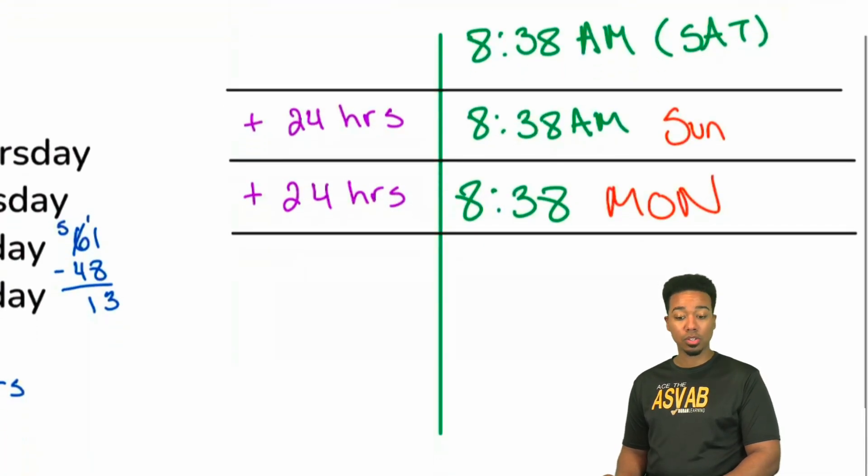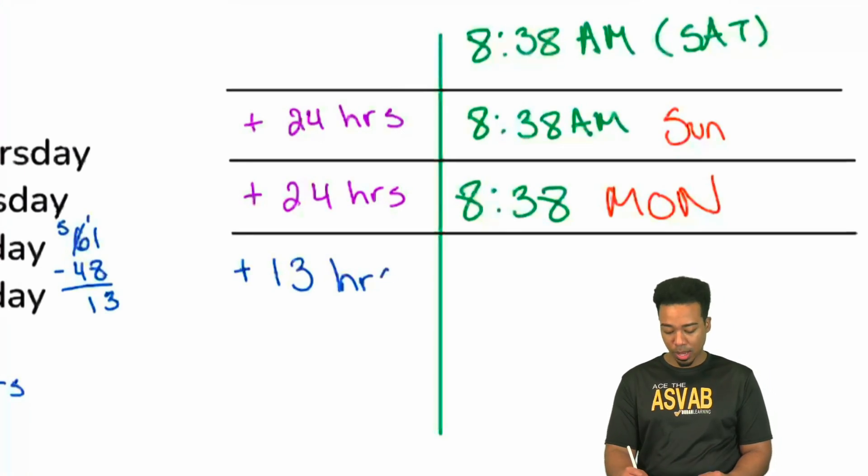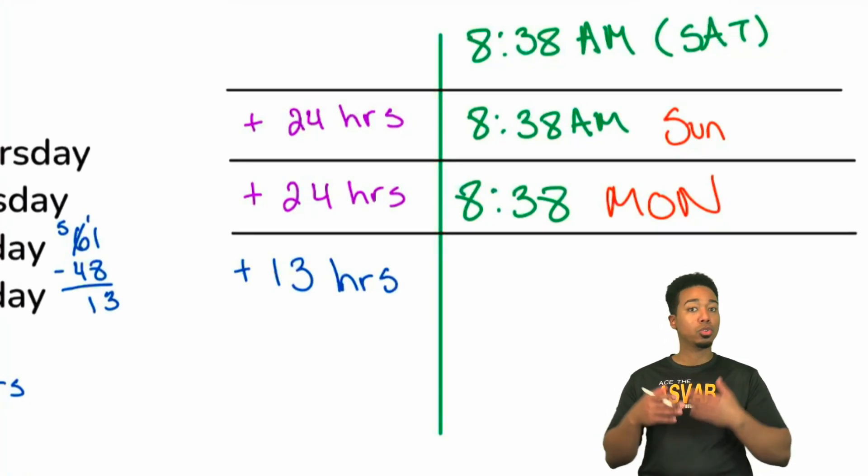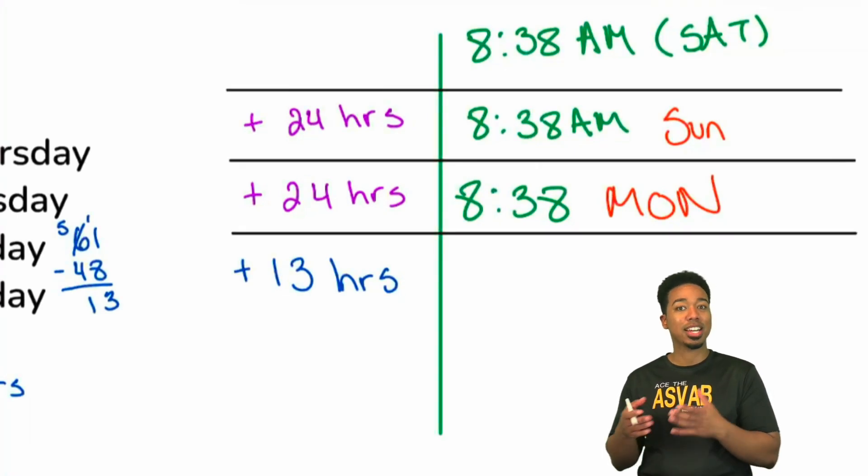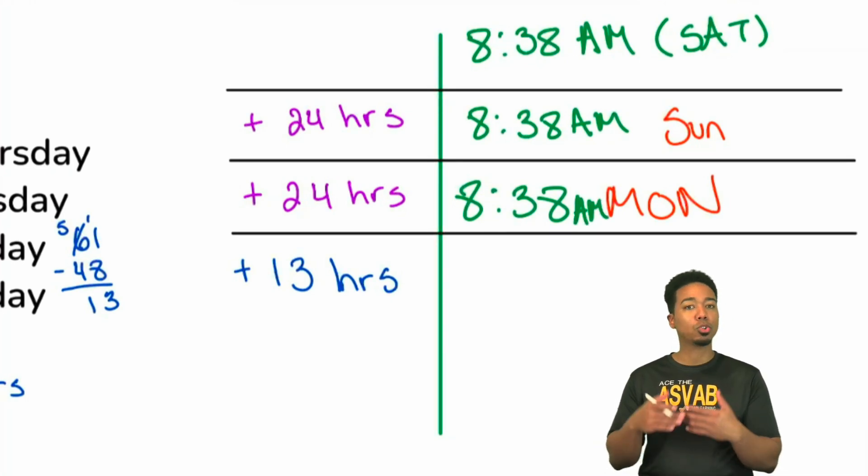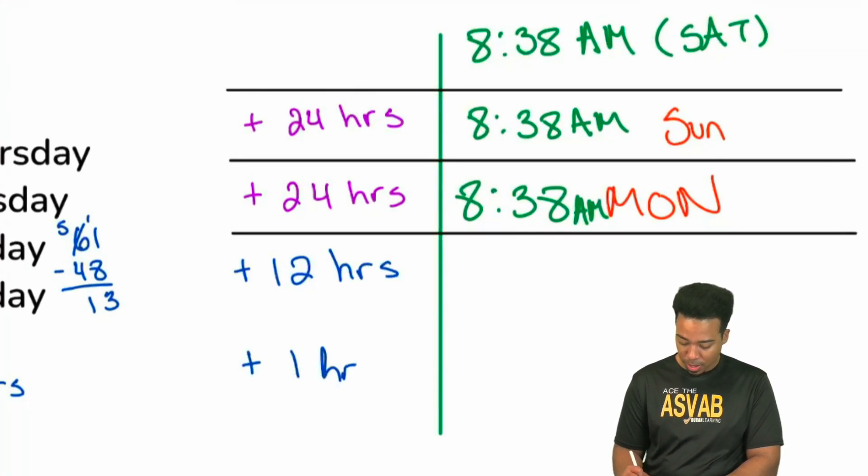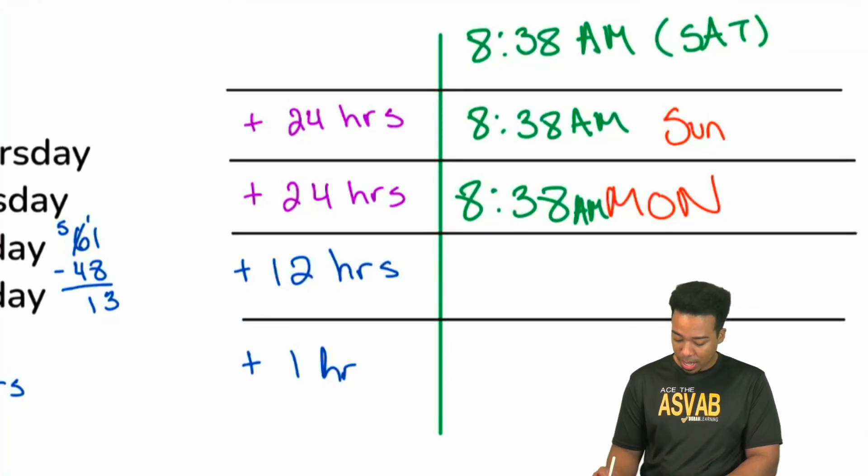Now let's go ahead and show the final step, which is going to be adding the remaining 13 hours. Here's a good way to split this up: if we go 12 hours, that's just going to be the same exact time except it'll be PM. We have AM right here, but if we add 12 hours that'll just be PM. So what I can do to show this very clearly is we can say plus 12 hours and plus 1 hour.